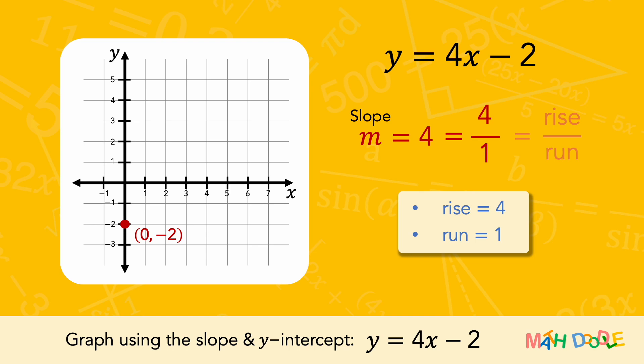Now, let's count the rise and run in a coordinate system, starting at the y-intercept. Up 4 units, and then right 1 unit.